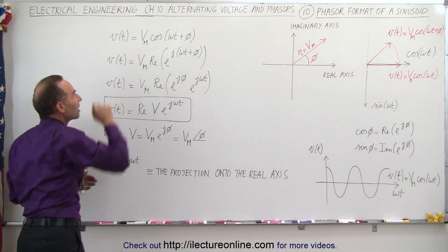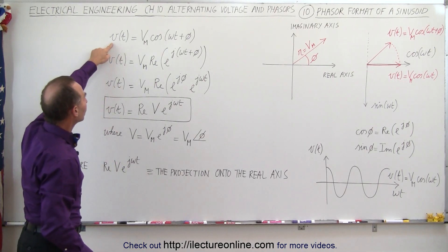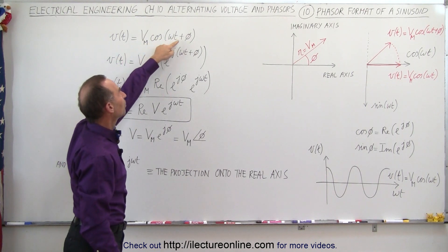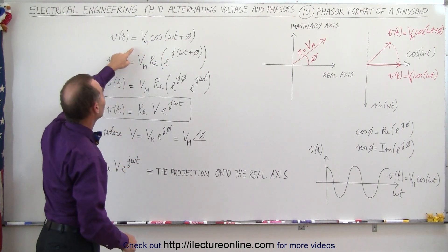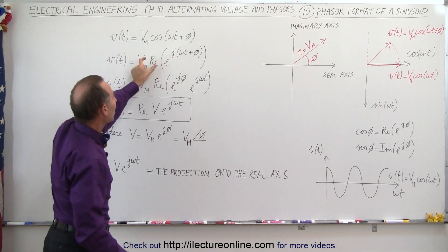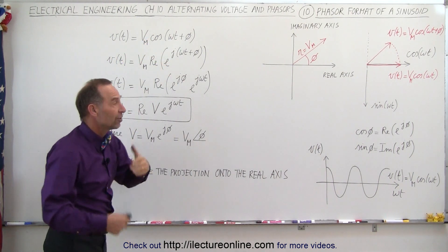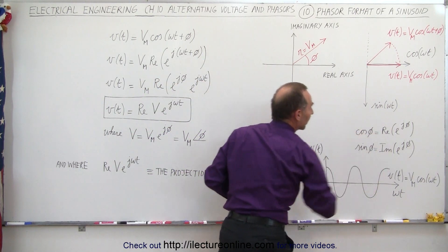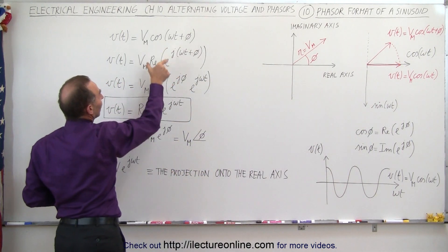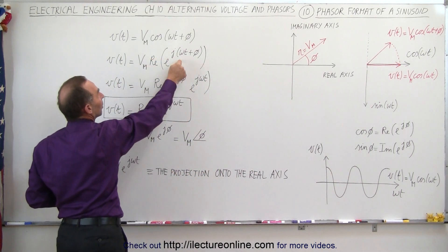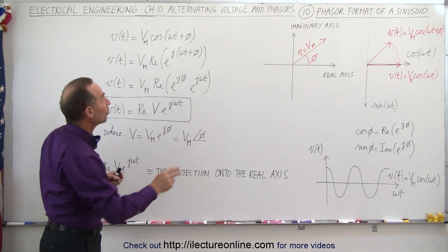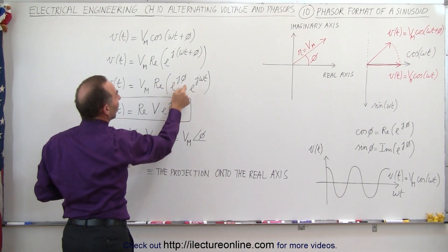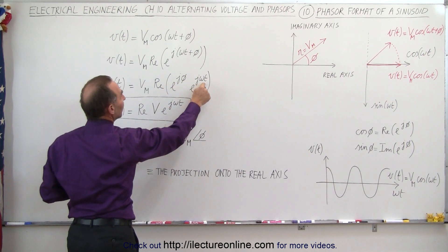Let's go back and look at that equation. The voltage as a function of time is equal to the maximum voltage times the cosine of omega t plus some phase angle. If we want to write this in exponential form, we take the real part of that, because the exponential form has both the cosine and the sine in it, and we just want the cosine. So this can be written as the real part of the exponential form. Since the exponent is the sum of two things, we can write this as the product: the real part of e to the j times phi and e to the j times omega t.